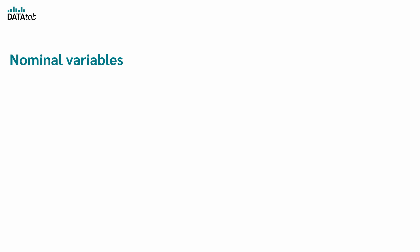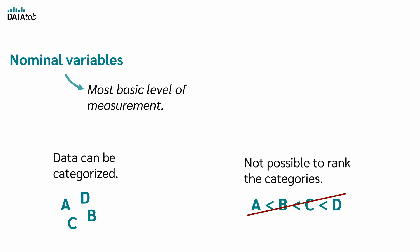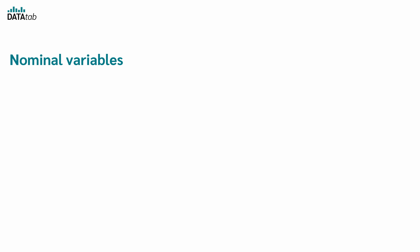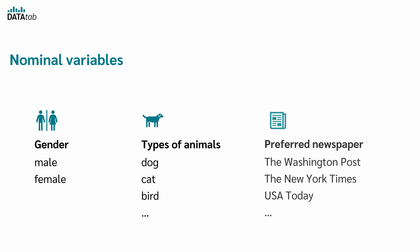What characterizes Nominal variables? This is the most basic level of measurement. Nominal data can be categorized, but it is not possible to rank the categories in a meaningful way. Examples of Nominal variables are gender, with the categories male and female, types of animals, with for example the categories dog, cat, bird, or preferred newspaper. In all these cases you can tell whether one value corresponds to the other, so you can distinguish the values, but it is not possible to put the categories in a meaningful order.